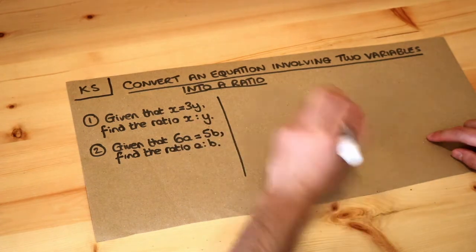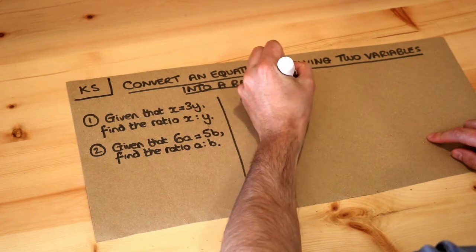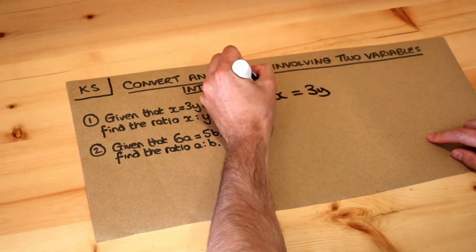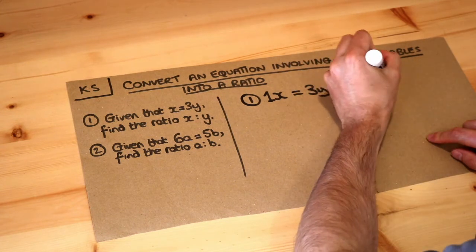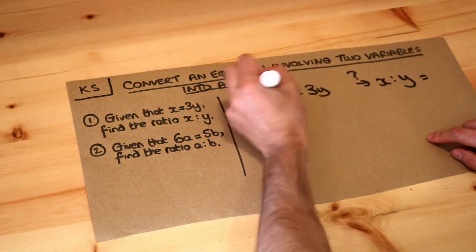Now you have to be very careful here because you might think that if you've got x is equal to 3y, you might think that this gives you a ratio of 1 to 3.